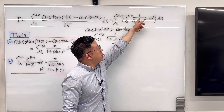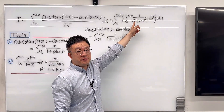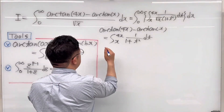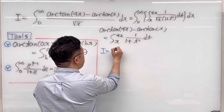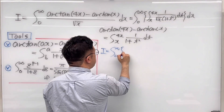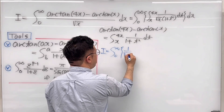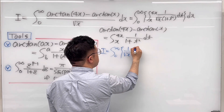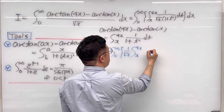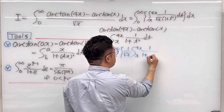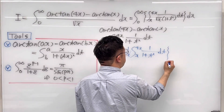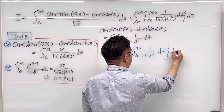Then let me pull this 1 over square root of x outside of this inner integral. Then rewrite this integral I as the integral from 0 to infinity, with a bracket of 1 over square root of x times the integral from x to 4x of 1 over 1 plus t squared dt, close the bracket, and we have dx after.